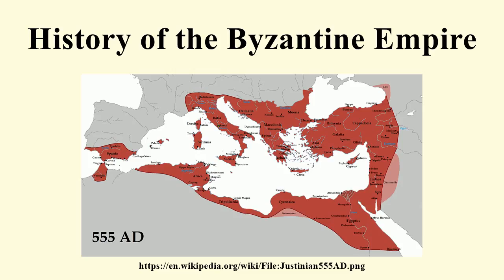After the fall of Odoacer in 493, Theodoric, who had lived in Constantinople during his youth, ruled Italy on his own. Thus, by suggesting that Theodoric conquer Italy as his Ostrogothic kingdom, Zeno maintained at least a nominal supremacy in that western land while ridding the Eastern Empire of an unruly subordinate.